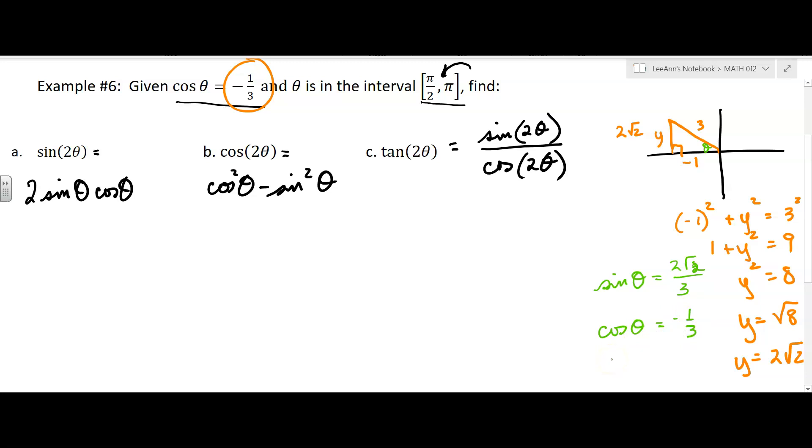Okay, so 2 times sinθ - do I know sinθ? Yes, it's 2√2/3 - times cosθ, which I also know is -1/3. So I'm going to get a value here of -4√2/9, so that one's done.